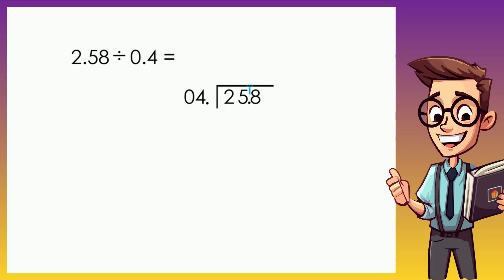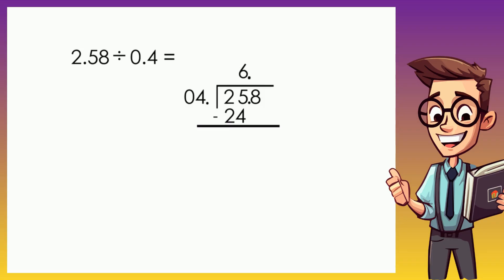Then we raise the decimal point above — make sure it's aligned. Earlier we did not do this because the dividend was already a whole number and it wasn't necessary. Now let's divide. Think of a number that when multiplied by 4 gives 25 or something closer to 25. That number is 6, and remember it's wrong to place it over the first digit — since we're dividing two digits you must place it over here. 6 times 4 is 24, which is closer to 25. We subtract: 25 minus 24 is 1. Next we bring down 8, giving us 18.